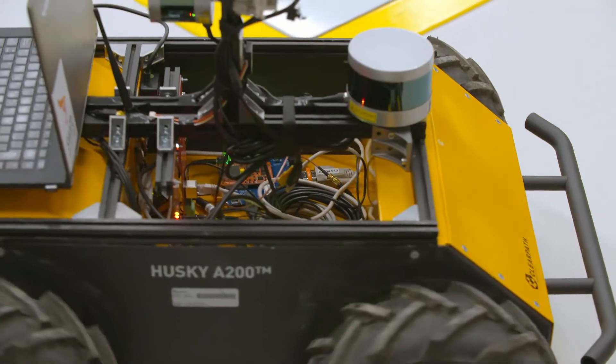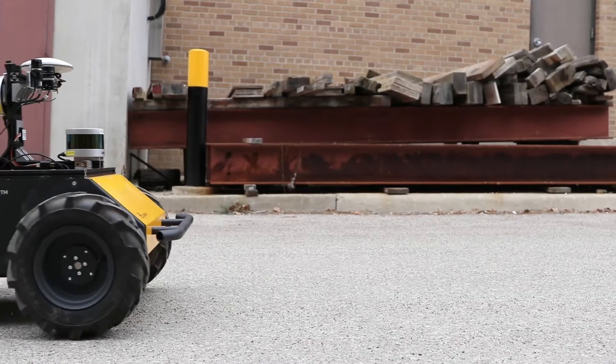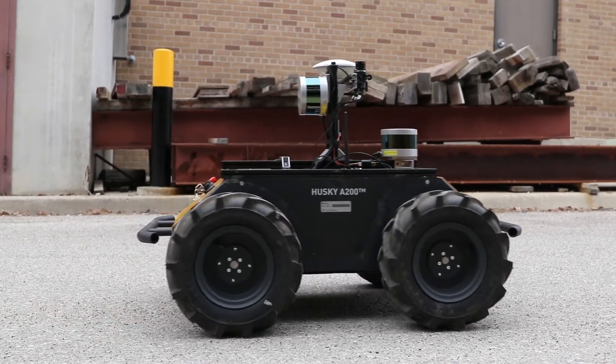It has a variety of sensors that you would find on typical autonomous research platforms. It has multiple 3D LIDARs, an RTK GPS, an IMU, and several different types of cameras—a regular camera and an infrared camera.